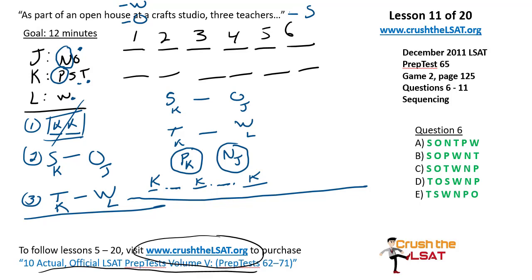A helpful hint for list questions: take one rule, eliminate what you can, then move to the next. Rule one may be tricky to apply first, so start with rule two — S before O. Looking at the choices, D is out on rule two. On rule three, T before W, B remains fine. Now for the remaining choices, think of S as SK, T as TK, P as PK. Answer A has TK and PK adjacent — that violates rule one, so A is out. Answer E has TK and SK adjacent, so E is out. Answer C is correct.